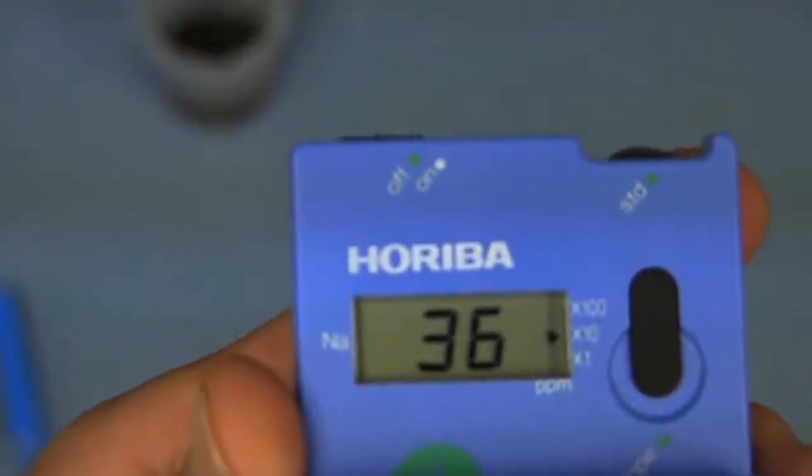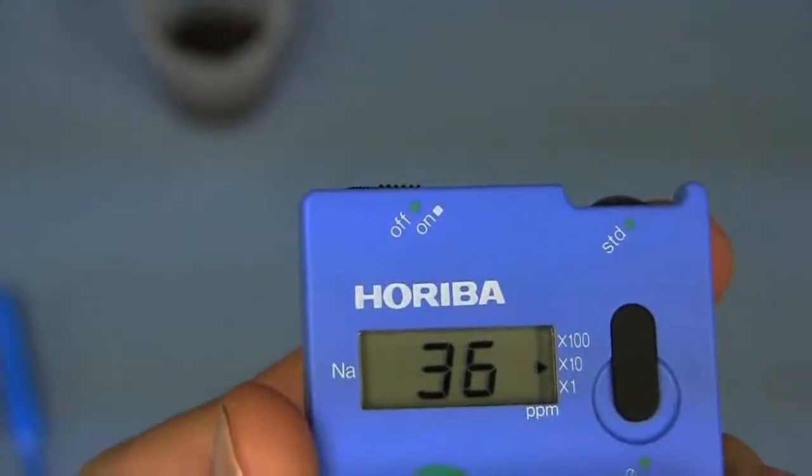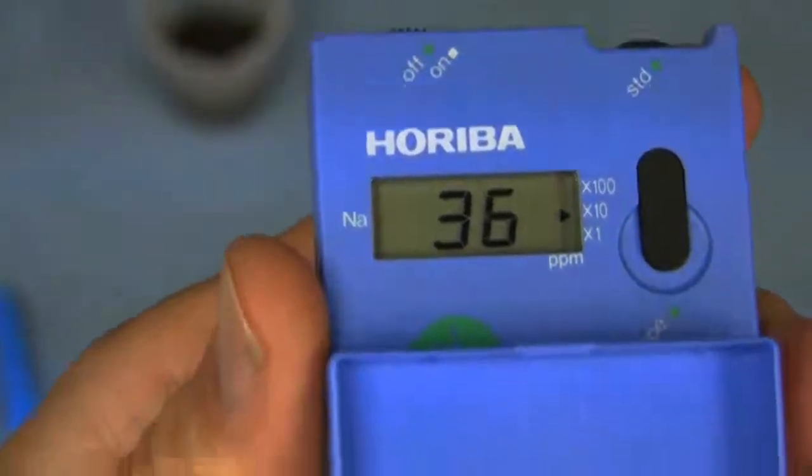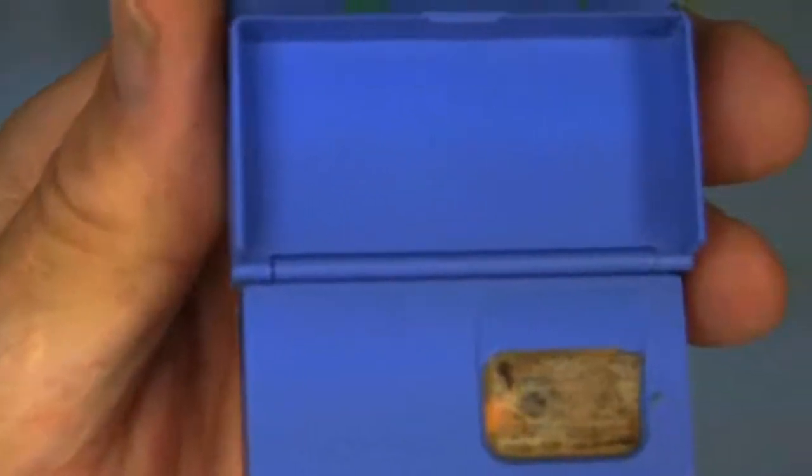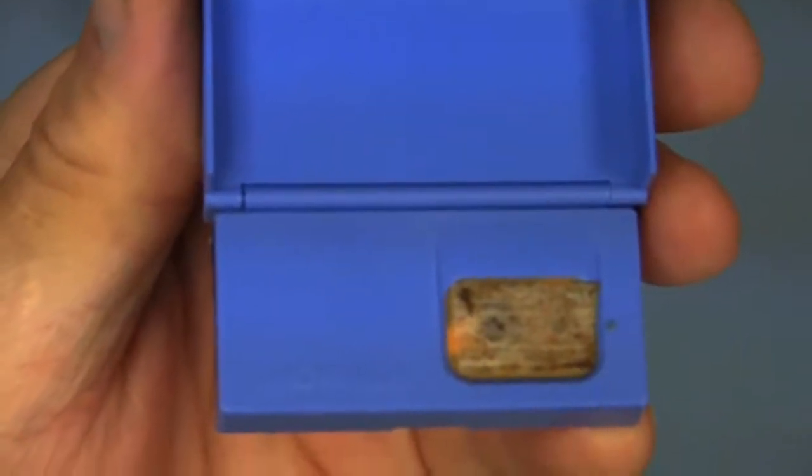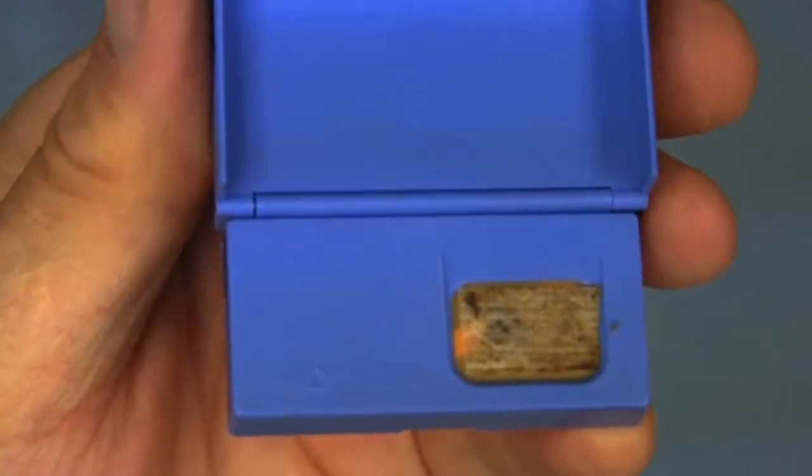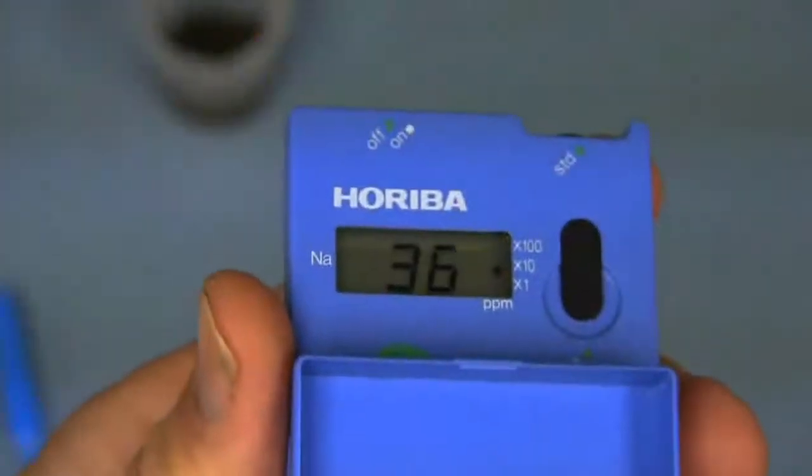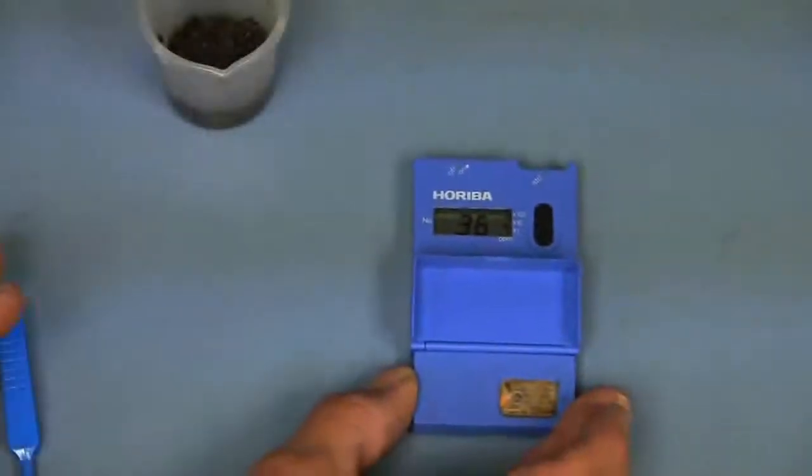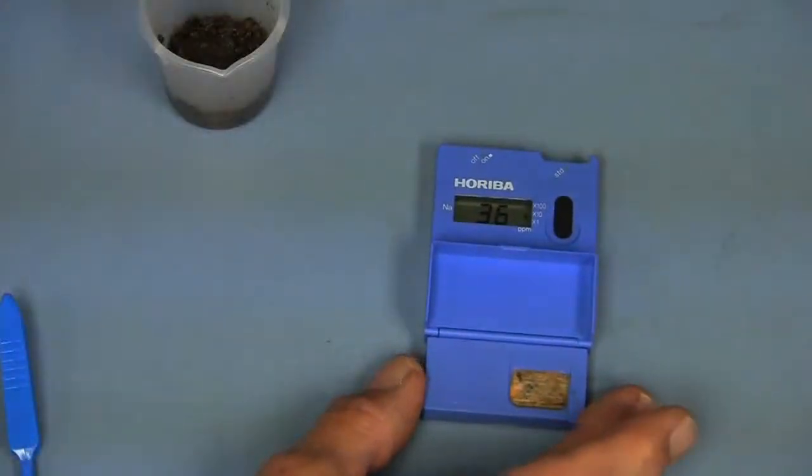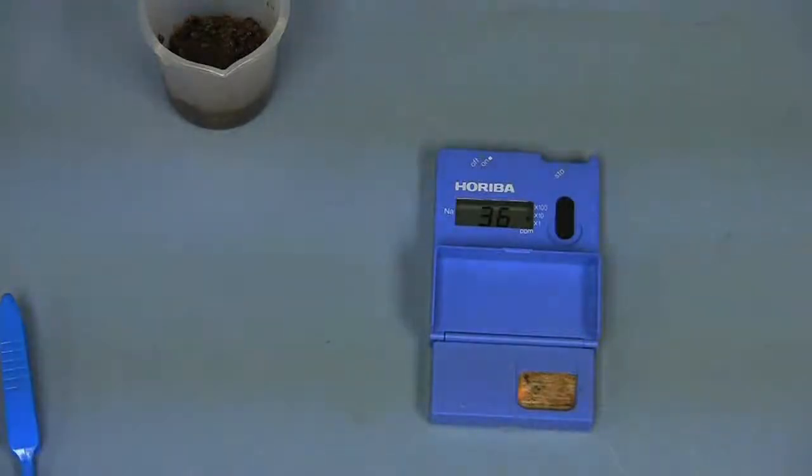As you can see, it's reading times 10, so that gives you 360 parts per million. You see the sensor at the bottom. So that shows you what the sensor looks like where the pad is. So that's a little bit on the high side. The salts in general on this green were elevated, and specifically sodium was about three times, or more than three times, the 110 part per million limit that we are looking for.